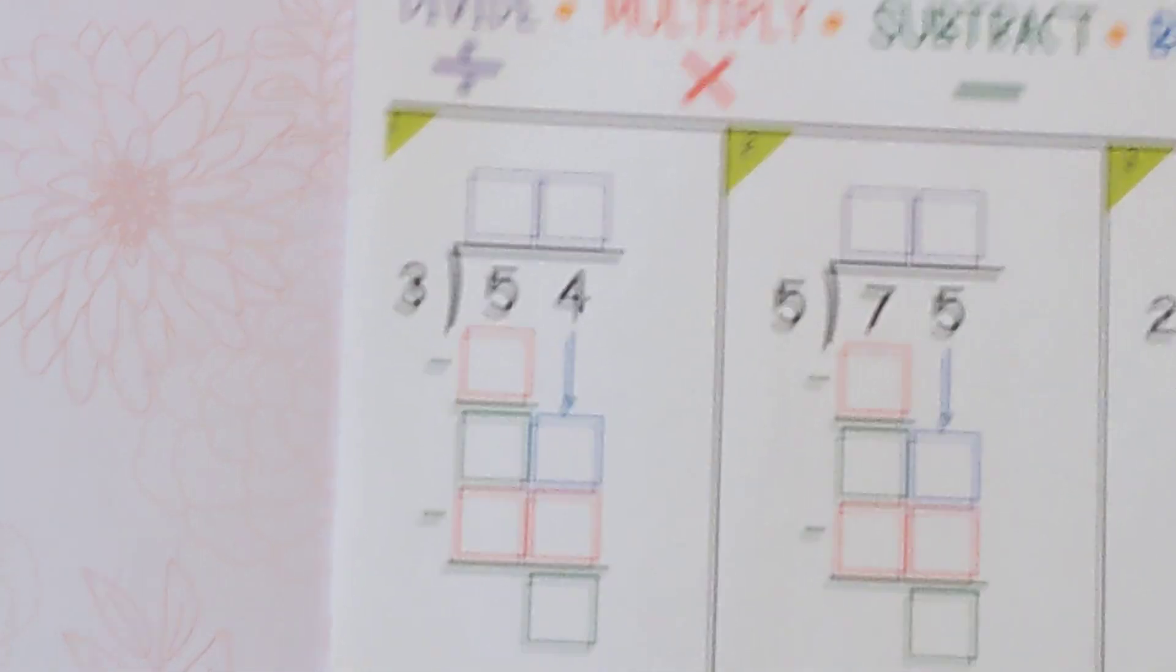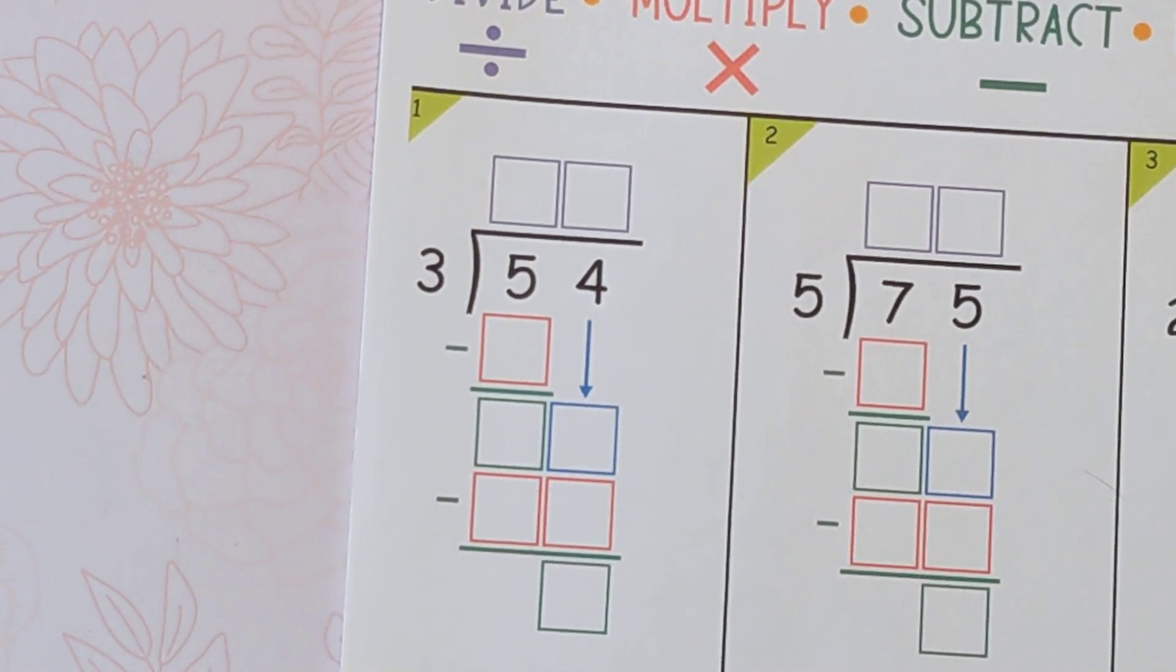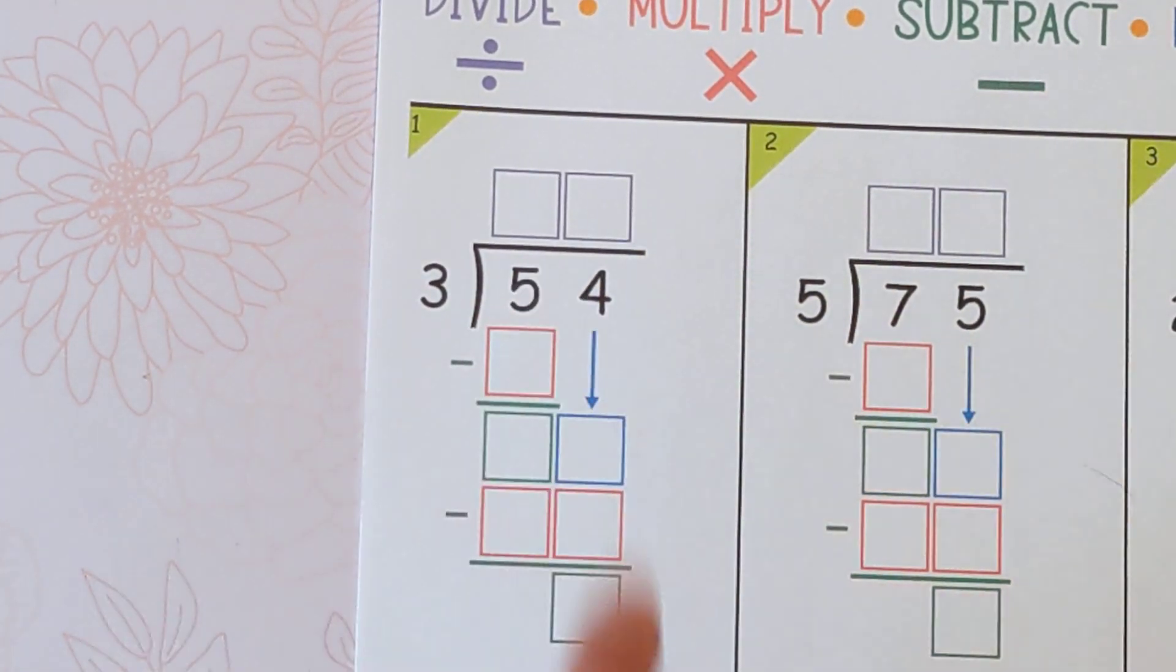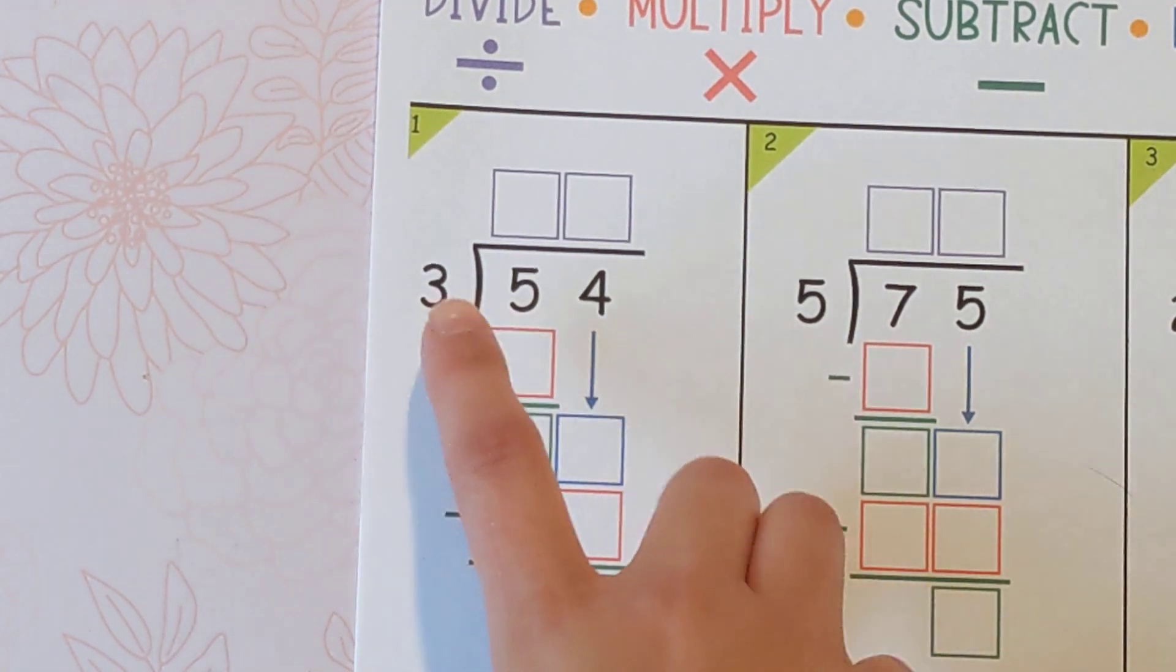with the problem 54 divided by 3. So 54 is the dividend, it's the number that's getting divided up, and then 3 is the divisor.